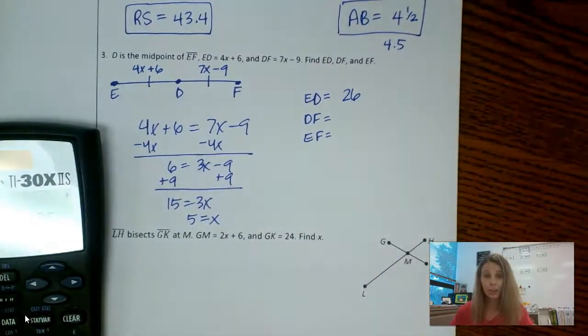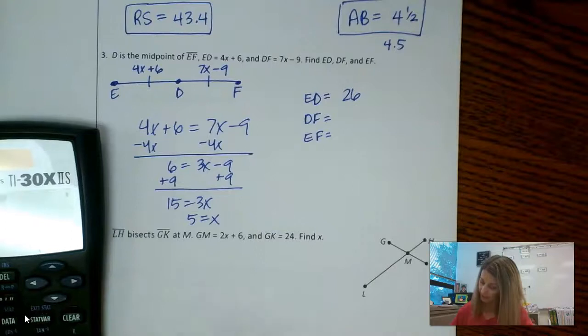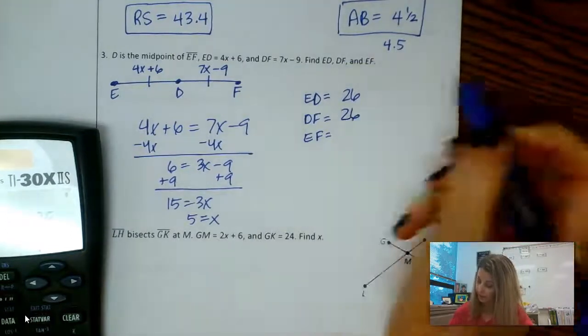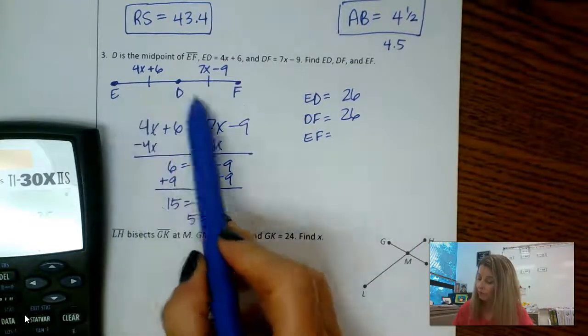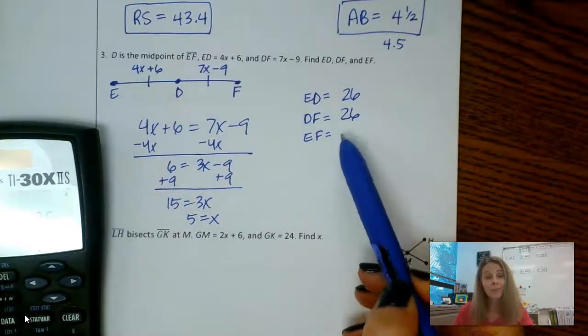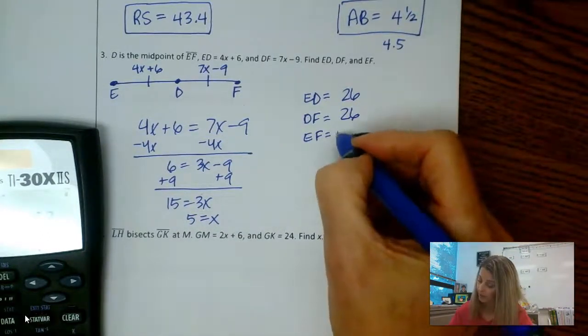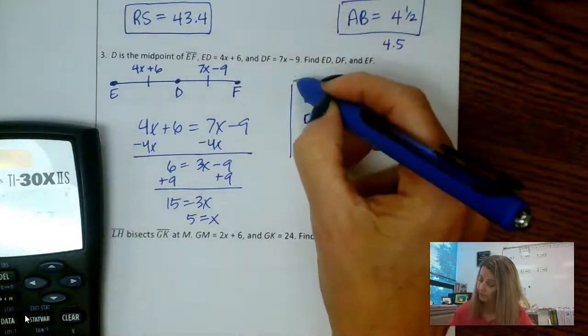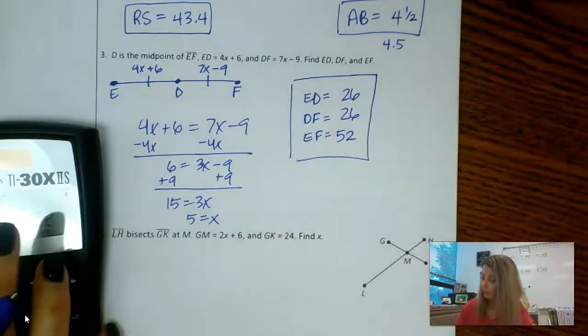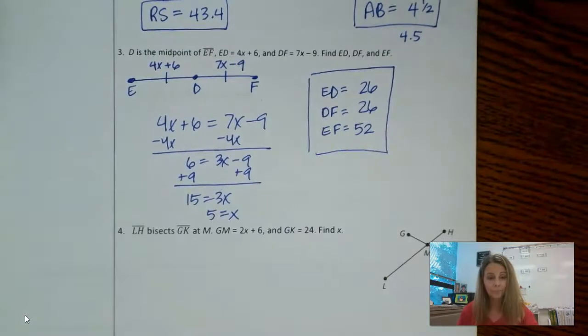Now I better get 26 for DF or something's wrong with my variable. So don't assume it's 26, go ahead and plug that in and double check. So 7 times 5 minus 9. Okay, 26. And then now I need the whole thing. Well, I can just simply add those two together. So the whole thing is 52.